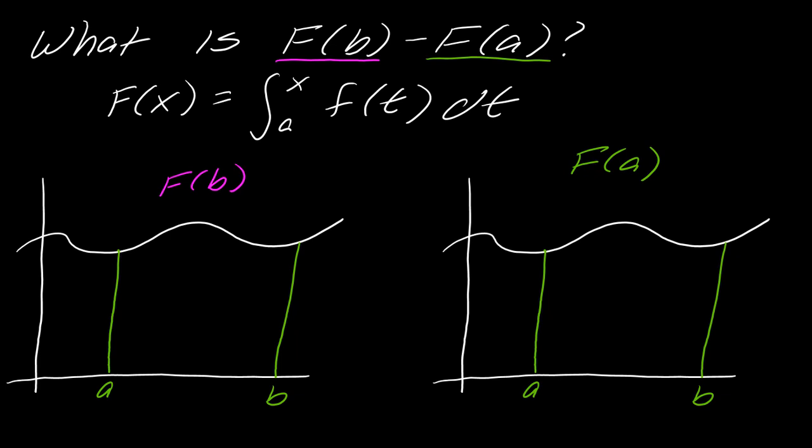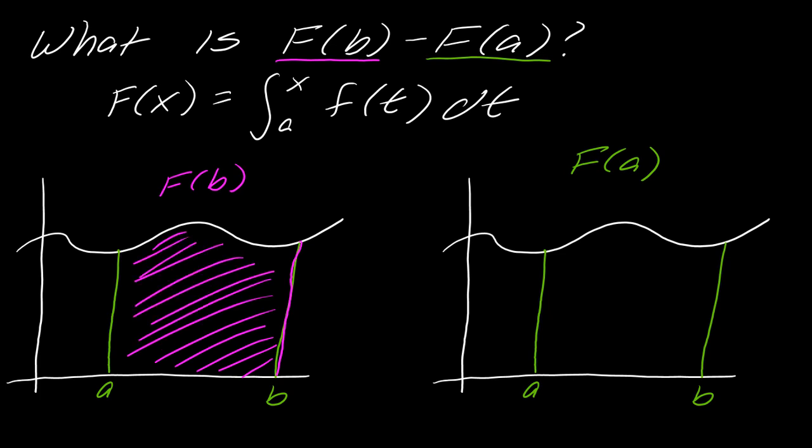So for F(b), so if I've got this graph here from a to b, so to actually see what is F(b), it's literally then, it's finding this area from here to here, right? It's talking about this whole little region in here. That's what this graph is.